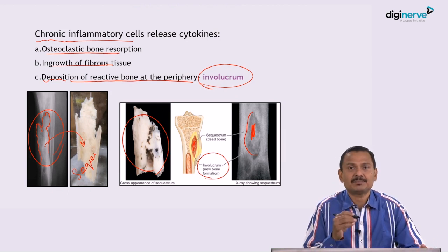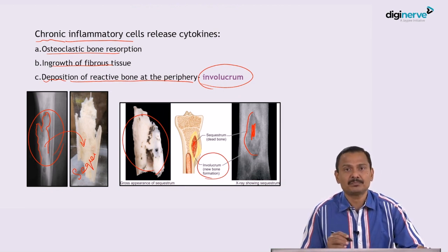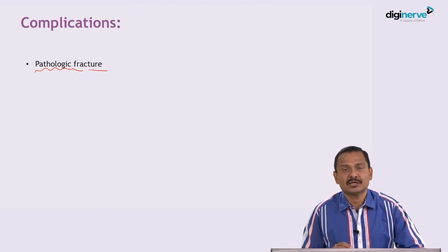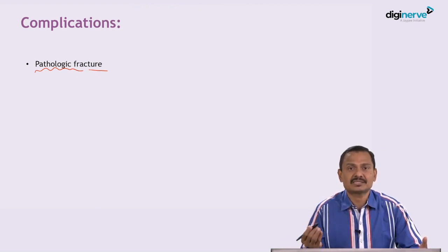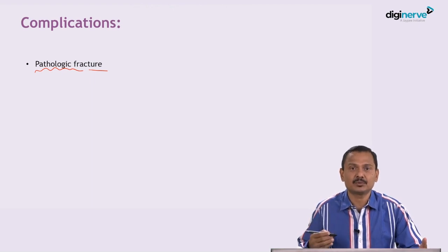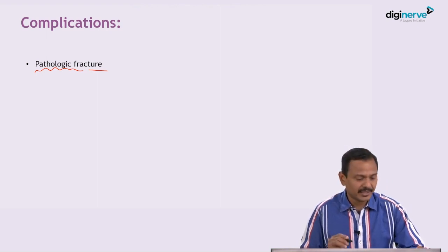We have understood the pathogenesis of osteomyelitis, the organisms that cause it, and the clinical features. Now we will come to the complications of osteomyelitis. First and foremost is pathological fracture. Because the periosteum is damaged, the bone becomes weak, and if it is a weight-bearing bone like the femur or tibia, it can easily undergo pathological fracture.